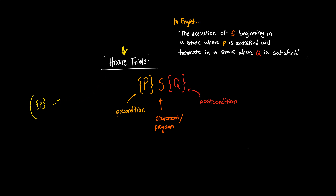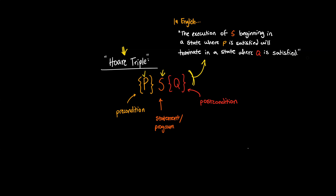The precondition is basically the condition that needs to be satisfied in order for execution of S to guarantee that it will terminate in a state where the postcondition is satisfied. So the way that you would read a Hoare triple in English would be: the execution of S beginning in a state where P is satisfied will terminate in a state where Q is satisfied.